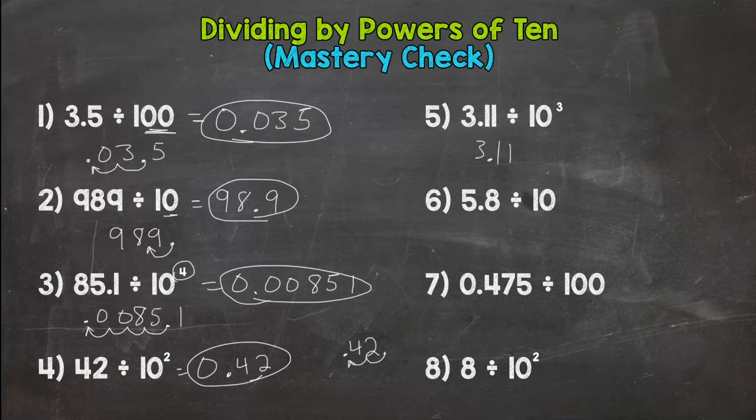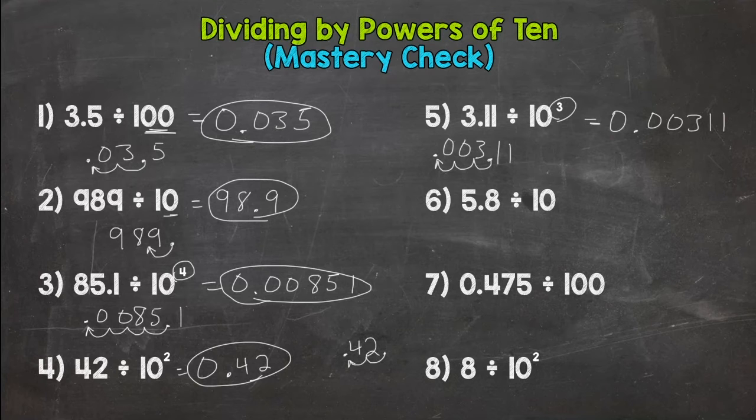Number five: 3.11 or three and eleven hundredths divided by 1000, or 10 to the third. We need to move the decimal point three times: one, two, three. Fill with placeholder zeros and we get 0.00311 or three hundred eleven hundred thousandths.